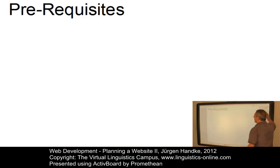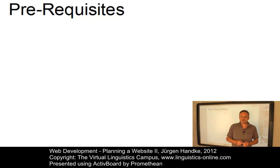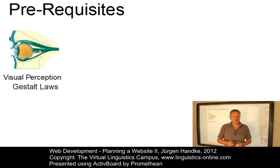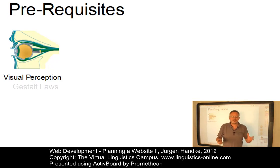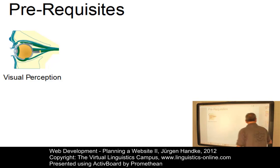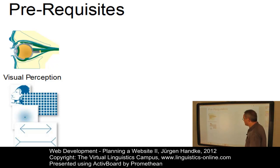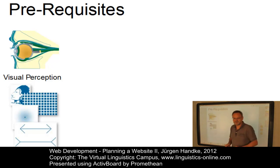Let's start with the user and look at some central physical prerequisites. Certain elements in human perception and memory are important for web publishing. For example, we have to take into account visual perception. Visual perception follows certain laws — the so-called Gestalt laws. These are to be followed in all phases of the graphics design process. One has to be aware that visual perception is sometimes deceptive, as illustrated by several types of visual deception.